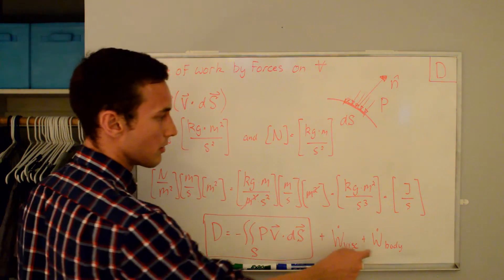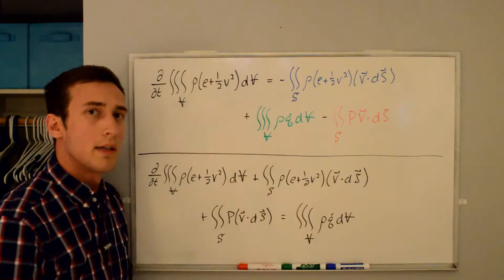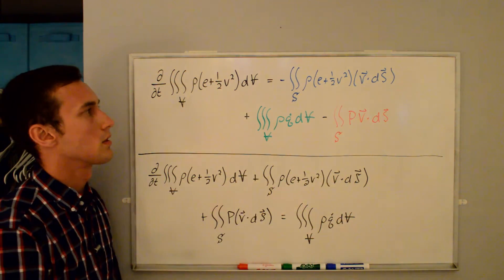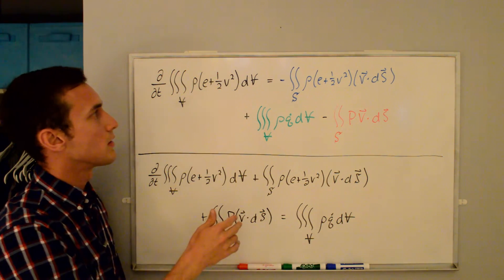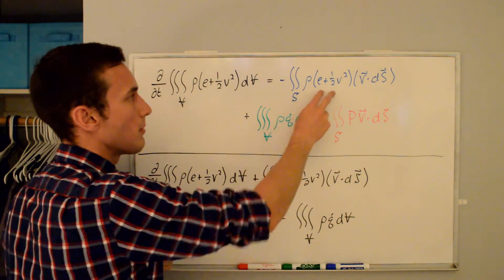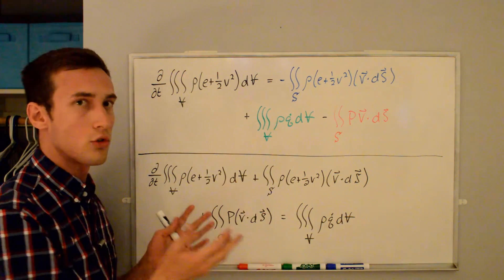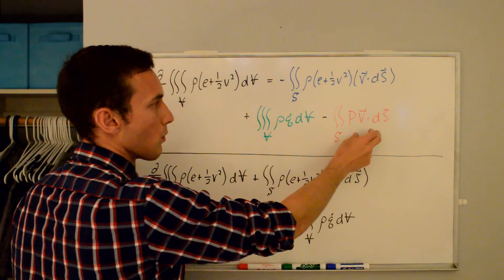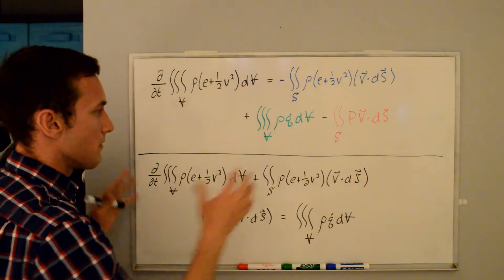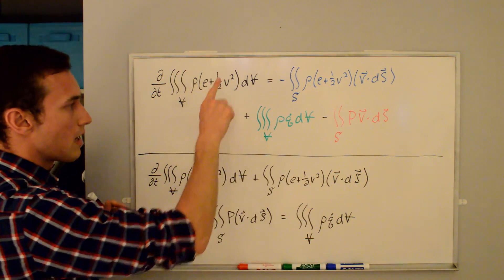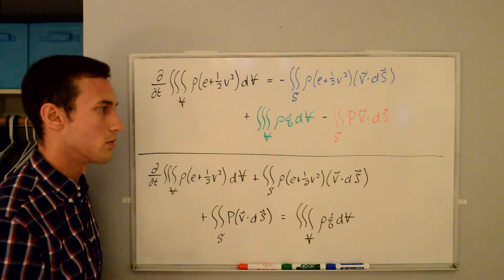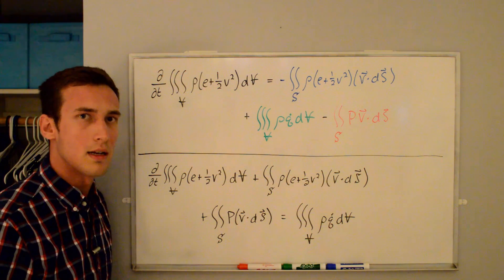If we wanted to add viscous and body forces, this is where they come into play. Now we combine all terms A, B, C, and D into one equation. We have a mix of volume and surface integrals — two volume integrals and two surface integrals. The time derivative of the volume integral of rho(e + ½v²) plus the surface integral of rho(e + ½v²)(V·dS) plus the surface integral of p(V·dS) equals the volume integral of rho q-dot. This is the final form of the conservation of energy equation, not accounting for viscous and body forces. Thanks for watching.